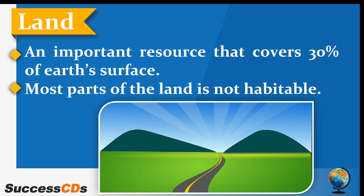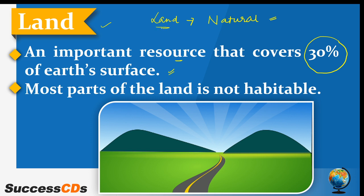What is land? Land is basically where we stay; it is an important resource. It covers 30% of the Earth's surface. Land is a natural resource because we get the land from nature. But a road is a human-made resource — it is made through construction activity. That is the difference between these types of resources.